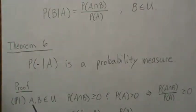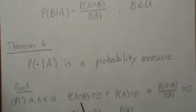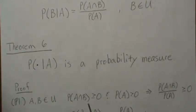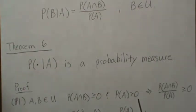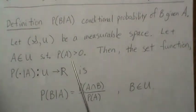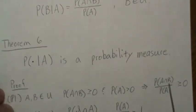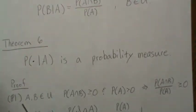For the first condition: if we let A and B be in the sigma field, then the probability of their intersection is greater than or equal to zero by P1, and the probability of A is greater than zero by definition. Since this is greater than zero and the numerator is greater than or equal to zero, the ratio is greater than or equal to zero. So it satisfies condition one.